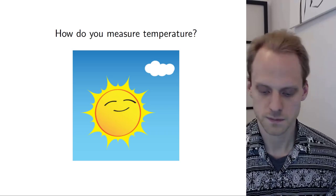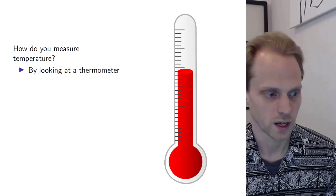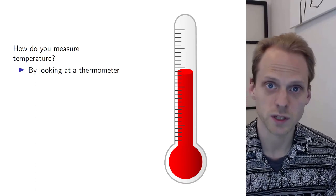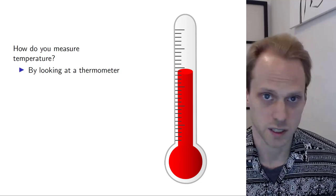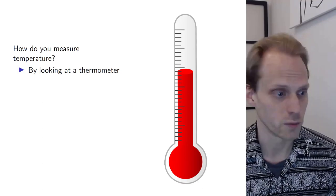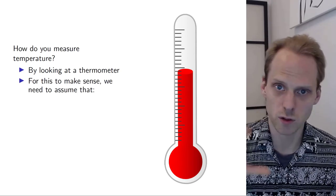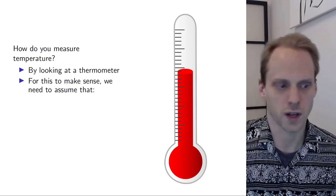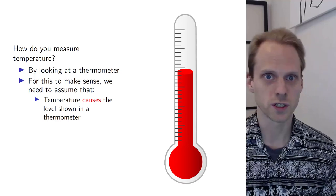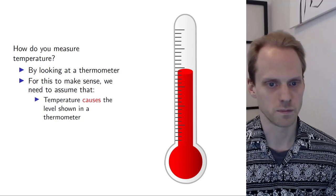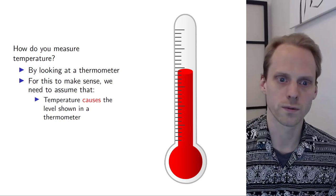But how do you measure temperature? What is temperature? One way that you can measure temperature is by looking at a thermometer. I believe there's quicksilver in there and it expands when it gets hotter. So the more it expands, the hotter it is. These devices are quite reliable and we can read off the temperature from the thermometer. For that to make sense, we need to make some very basic assumptions, because the thermometer is not temperature itself. We need to assume that temperature — the thing we're actually interested in, which is out there in the world — causes the level shown on the thermometer. We need to assume that this thing goes up and down as a function of temperature itself.